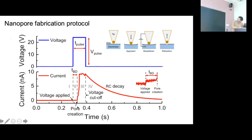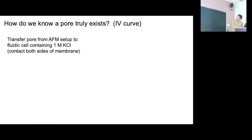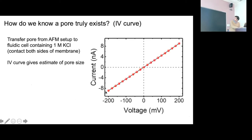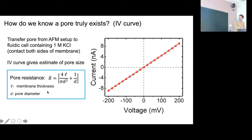That current plateau signals we've made a pore. To verify, we transfer the membrane to a cell containing 1 molar potassium chloride — standard translocation buffer — and measure the IV curve. We get a nice linear IV curve, and from the resistance we can back out an estimate of the pore diameter. Using the formula assuming a cylindrical pore with an inlet resistance factor, we get approximately 10 nanometers for a 9.2 nm thick membrane.